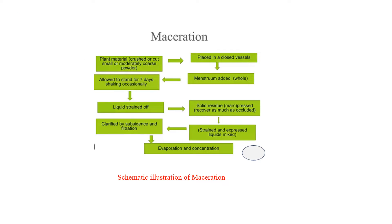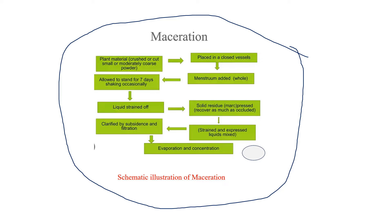In the schematic of maceration: first, take a closed vessel and add your menstruum. Wait at least three days and a maximum of seven days. The liquid is strained off — the dissolved compounds are in the liquid and the solid residue (marc) remains. The marc is pressed to collect more liquid. The two liquids are mixed, filtered, and the solvent is evaporated, giving the concentrated extracted compound.